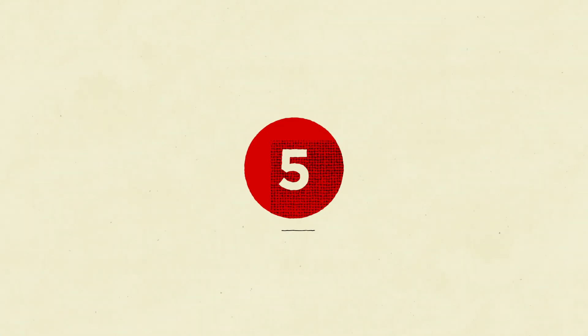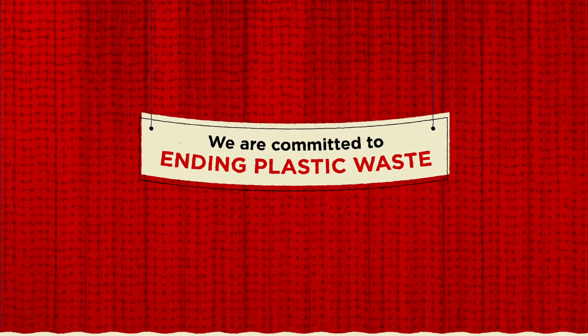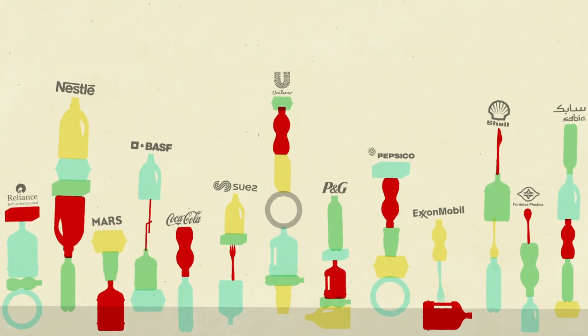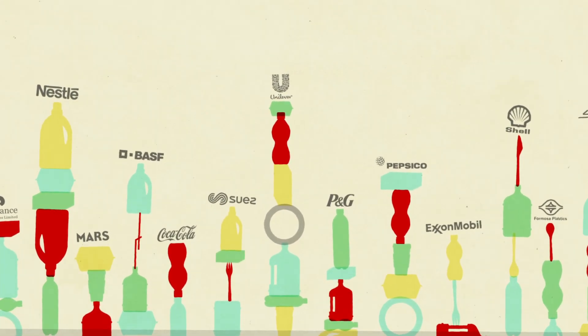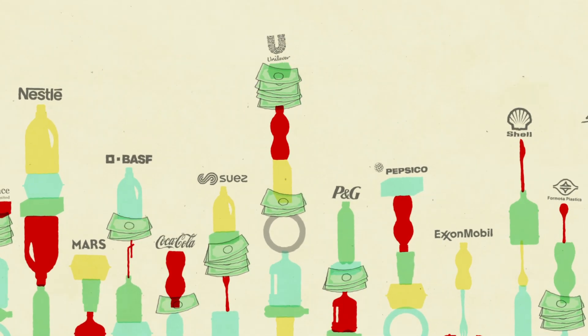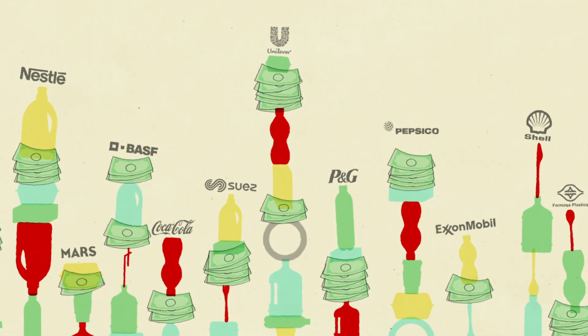5. The ugly truth is that the biggest promoters of chemical recycling are big oil, plastic producers, and consumer brands, including many of the worst plastic polluters. Many of these companies are hooked on plastic to keep making profits at the expense of the planet.